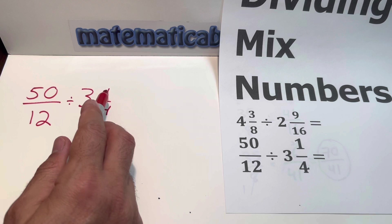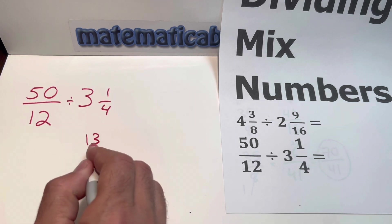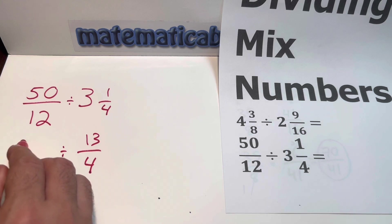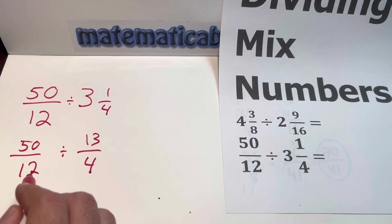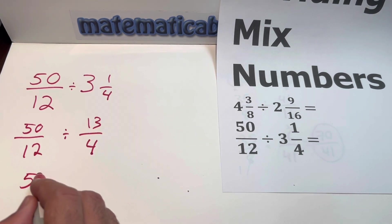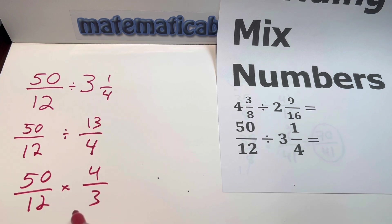3 then 4 is 12, plus 1 is 13. 13 divided by 4. Here is dividing and that's 50 over 12. Now we change this into multiplication. So that would be 50 over 12 times 4 over 3.